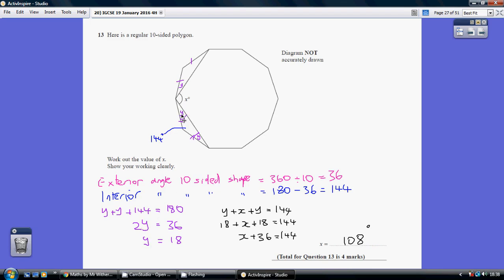So, this is 18 degrees, and this is 18 degrees. We know together, y plus x plus y is 144, because that's another one of these interior angles. So, our angle x is going to be 144, take away 18, take away 18, which gives us x being 108 degrees.